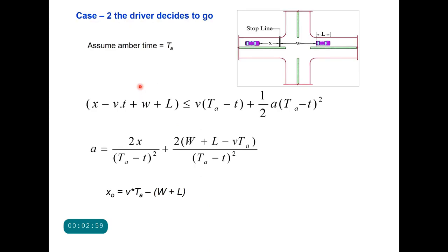Case 2: if the driver decides to go. Let us assume the amber time provided by the signal is ta, and within this time the driver must be able to clear distance x plus the width of the intersection w plus the length of the vehicle l. Assuming reaction time is small t, during which the driver travels at speed v, the remaining distance (x − v×t + w + l) must be covered in the remaining time ta − t.